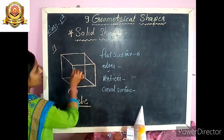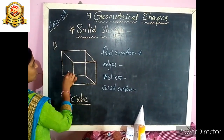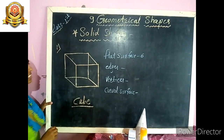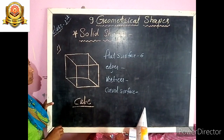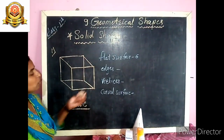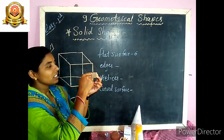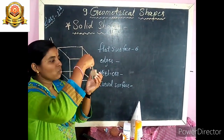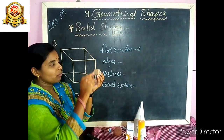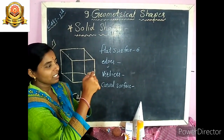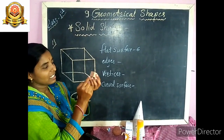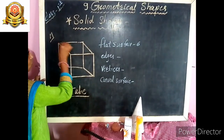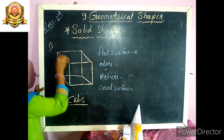Now, edges — this cube has 1, 2, 3, 4, 5, 6, 7, 8, 9, 10, 11, 12 edges. This cube has 12 edges.